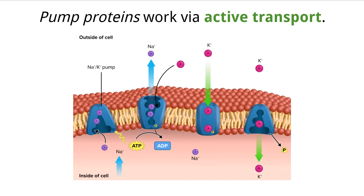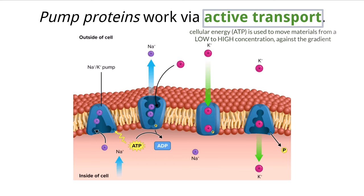We have talked a lot about passive transport, which does not require any input of chemical energy and has substances move from high concentrations to low concentrations down their concentration gradient. Active transport is the exact opposite of this. In active transport, energy — mainly in the form of ATP — is used to move materials across the cell membrane against their concentration gradient, meaning from a low concentration to a high concentration.